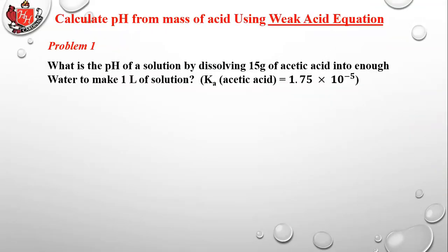Problem number one: calculate the pH from the mass of an acid using the weak acid formula. You should review the last lesson and jot down the five formulas for strong acid, strong base, weak acid, weak base, and Henderson-Hasselbalch, and learn which one to use in which situation. The question is: what is the pH of a solution made by dissolving 15 grams of acetic acid into enough water to make a one-liter solution? Given the Ka of acetic acid, since it only involves a weak acid, you'll use the weak acid equation.